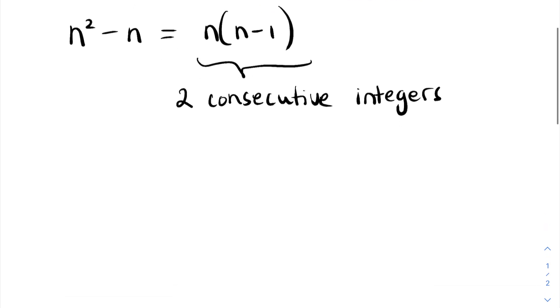Now what is true of consecutive integers is that if one is odd, the other one is even. Now it doesn't matter which way round that goes. Because if n is odd, n minus 1 is even. If n minus 1 is odd, n is even. So for two consecutive integers it's always true that one is odd and one is even.